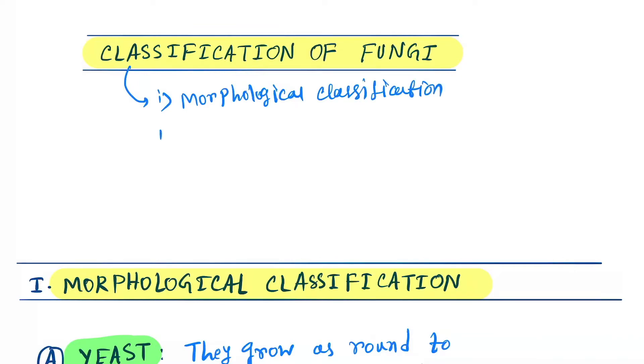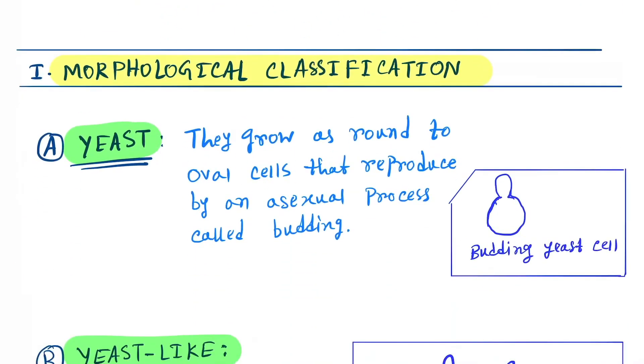Next one is based on the sexual spore, also called the taxonomical classification, and the third one is based on the location. Let's start with the morphological classification.